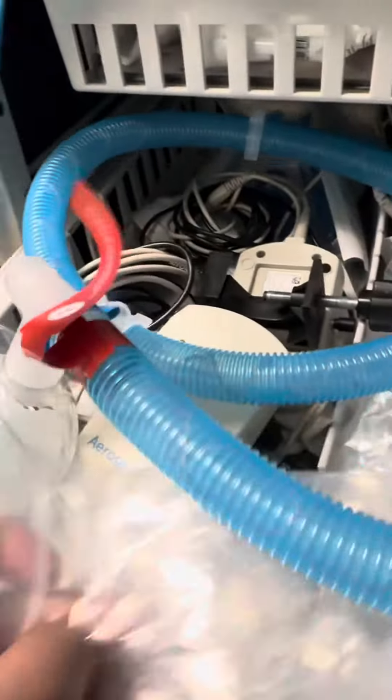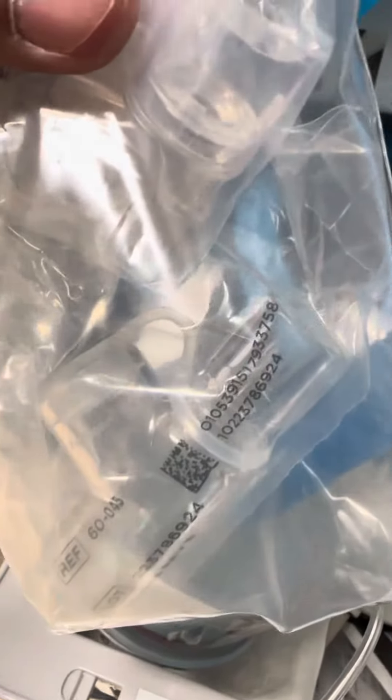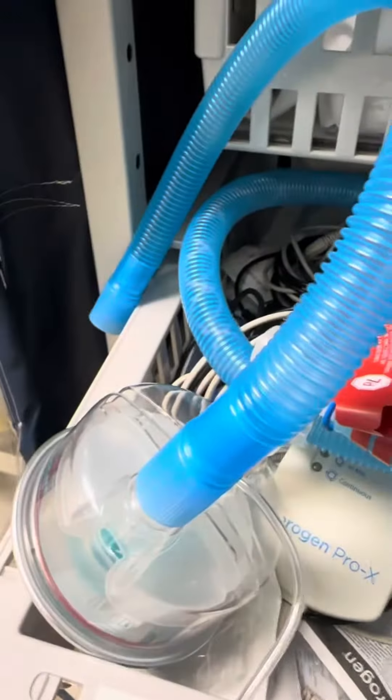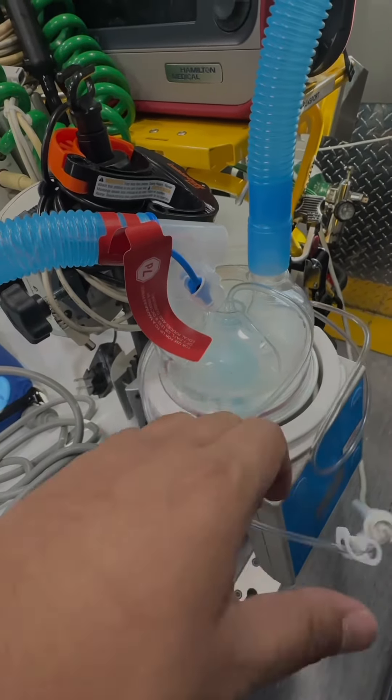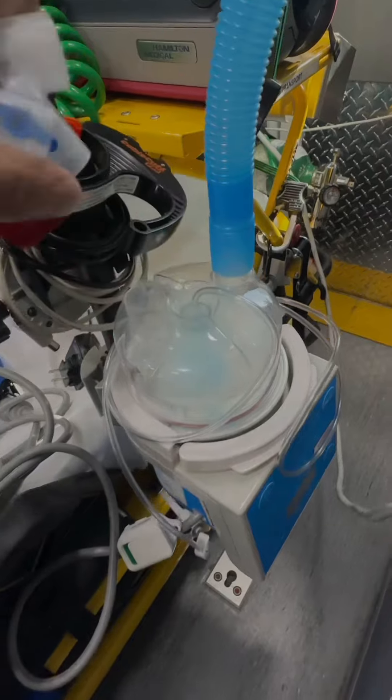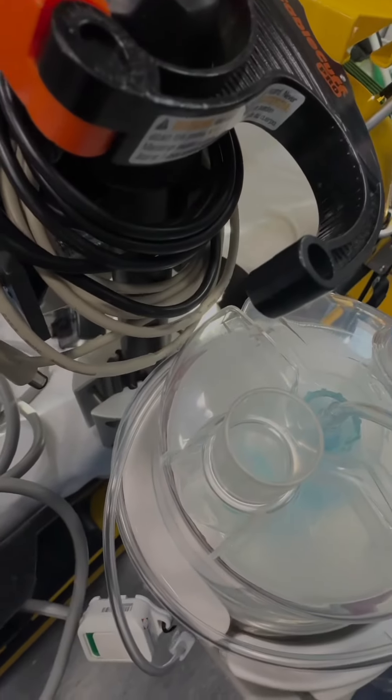If you're needing to do treatments, just use the aerogen cup. Put it right here on the dry side. Much less condensation than our previous system. We don't need to have the water bag. Just clamp it off and just put some sterile water right in there.